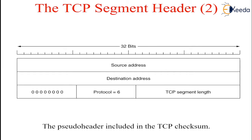The checksum field provides for extra reliability. It checksums the header, the data, and the conceptual pseudo header shown in the figure. When performing this computation, the TCP checksum field is set to 0 and the data field is padded out with an additional 0 byte if its length is an odd number. The checksum algorithm is simply to add up all the 16-bit words in one's complement and to take the one's complement of the result. When the receiver performs the calculation, it has to follow the same procedure. The pseudo header contains the 32-bit IP addresses of the source and destination machines. The protocol number for TCP is 6 and the bit count for the TCP segment including the header. Including the pseudo header in the TCP checksum computation helps to detect misdelivered packets.